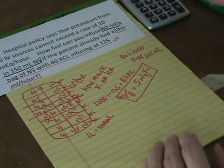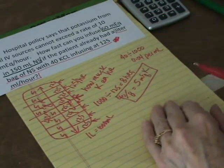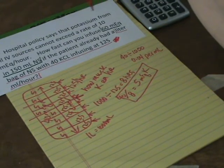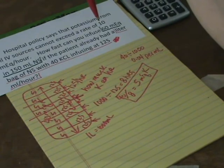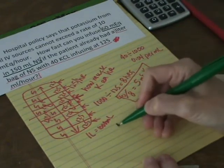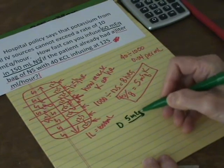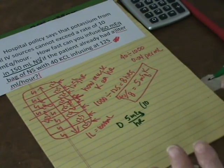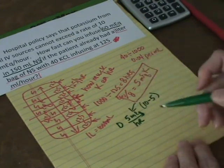The bottom line here is the patient in this problem is already getting 5 milliequivalents of potassium an hour before you walk in the room with that piggyback. By hospital policy, you cannot exceed a rate of 10 milliequivalents an hour. You already got 5 going. You can't go higher than 10. So your desired becomes 5 milliequivalents per hour. Okay? And 5 is because you already, 10 is the max and you've already got 5 going. That's why what's desired is 5 milliequivalents an hour.